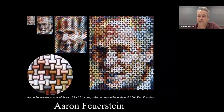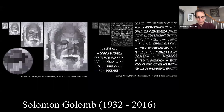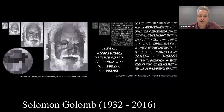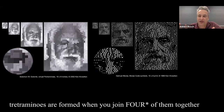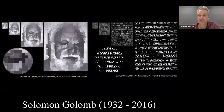Mark: Here is the Solomon Golomb piece. Solomon Golomb is known to mathematicians, among other things, for a book titled Pentominoes — geometric figures made from joining squares together edge-to-edge. Polyominoes in general, but pentominoes are when you join five of them together. Tetrominoes form when you join four together and form the basis of the game Tetris. Dominoes are formed by joining two squares together. I love this portrait of Solomon Golomb done out of these pentominoes that he studied. And on the right you see Samuel Morse, the inventor of the Morse code system — a portrait of Morse done out of Morse code symbols.